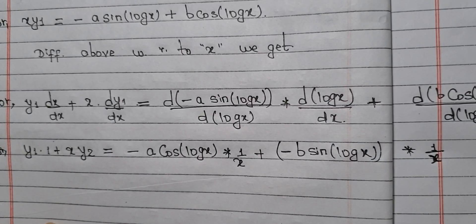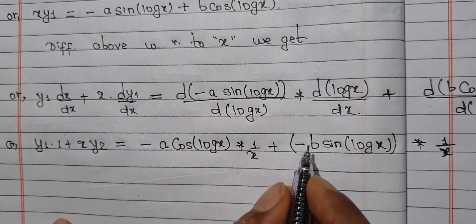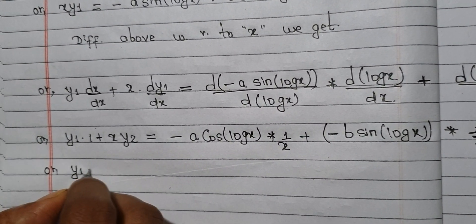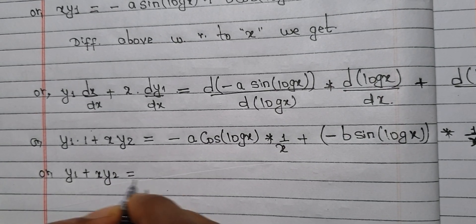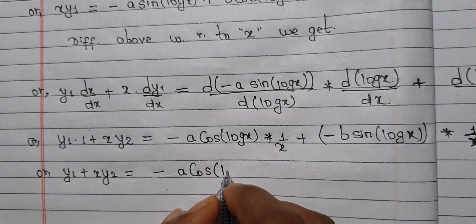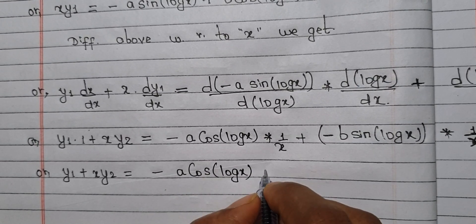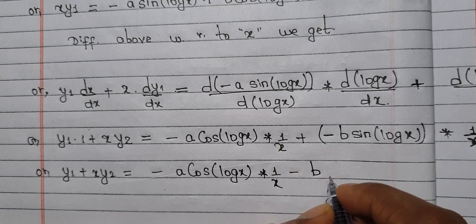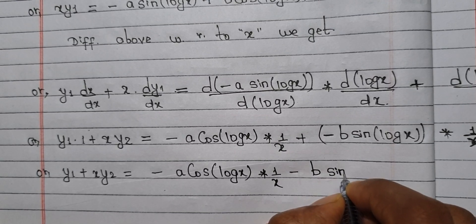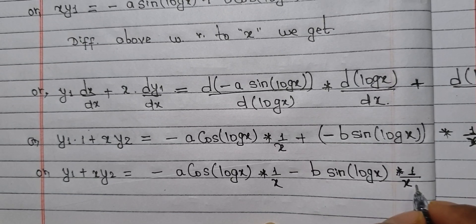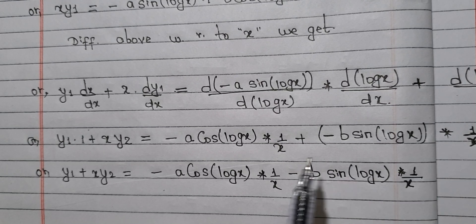Now we are going to do the next step. We are going to open the bracket, so we get minus. So y1 plus x·y2, which is equal to minus A·cos(log x) into 1/x, minus B·sin(log x) into 1/x. This is the same. Next, we will put a common denominator in the proper form. This is minus.